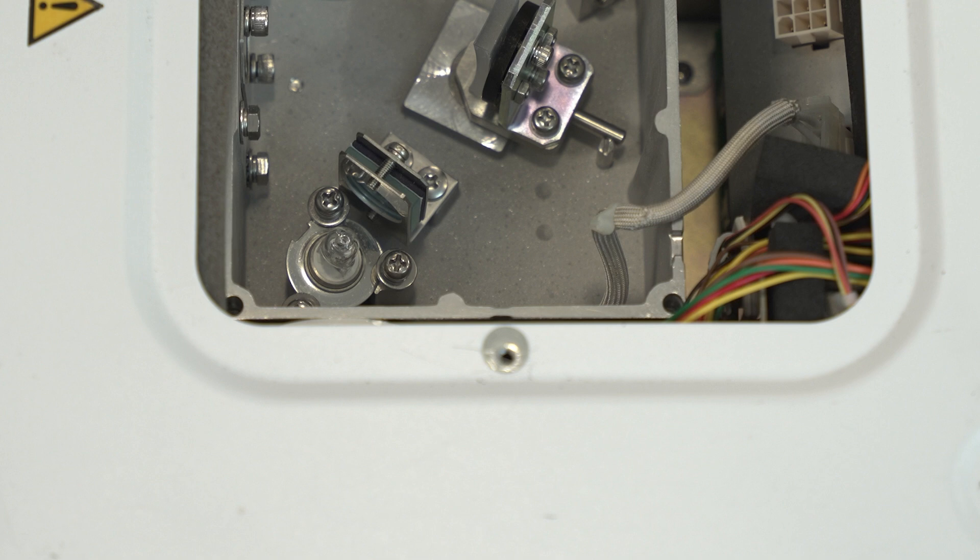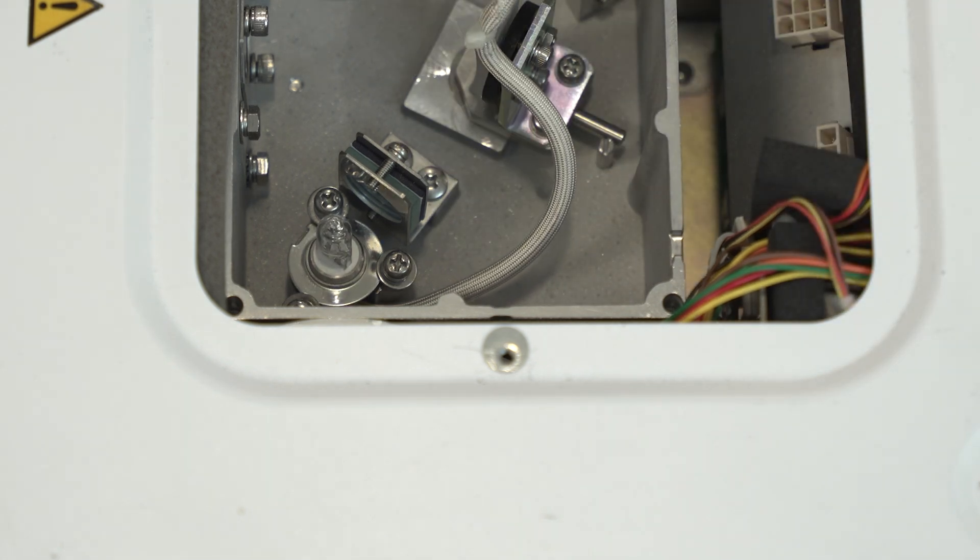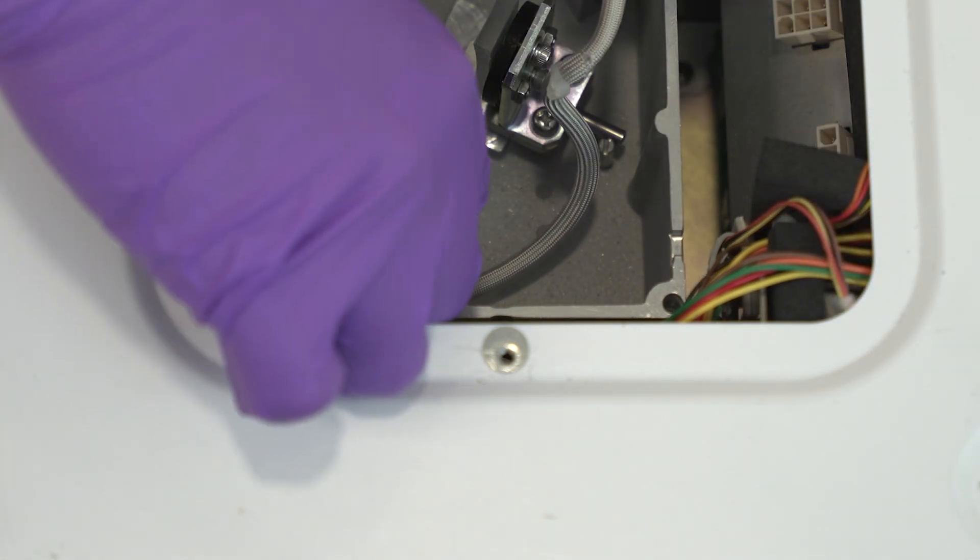If you have an SPD-40V UV-Vis detector, there is a tungsten lamp in addition to the deuterium lamp. Press down on the fastening while pulling the tungsten connector out of the plug.